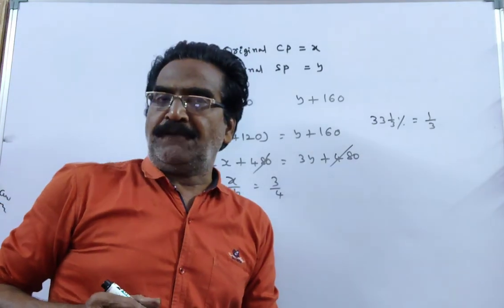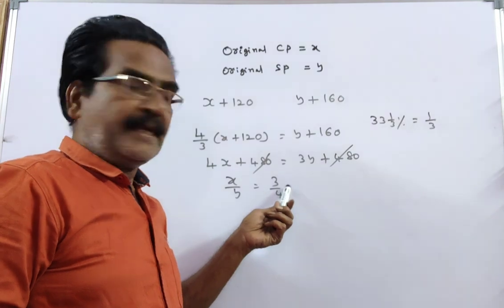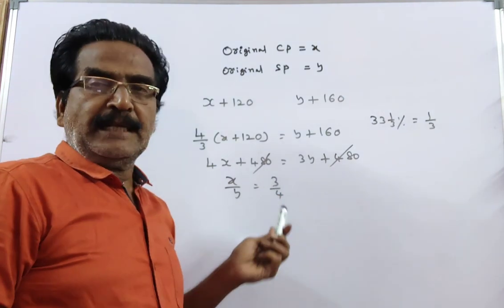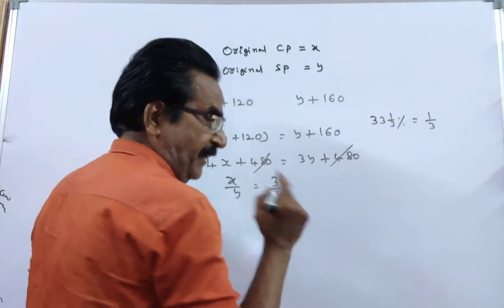X by Y is equal to 3 by 4 implies if the cost price is 3, then the sold price is 4. So, that means the profit is 4 minus 3, which is 1. Profit is 1.